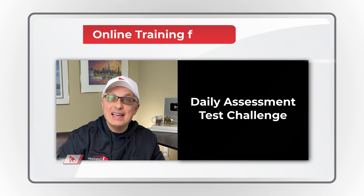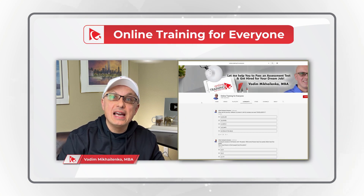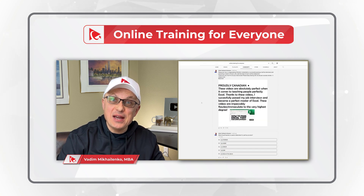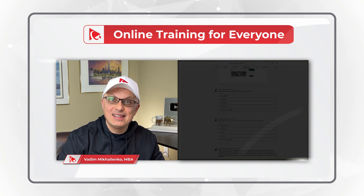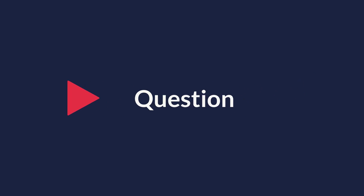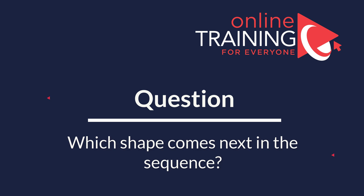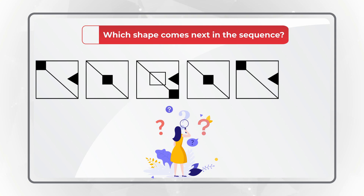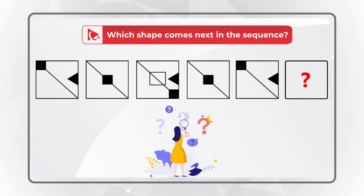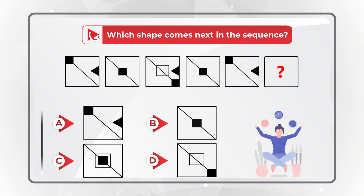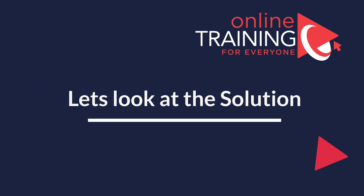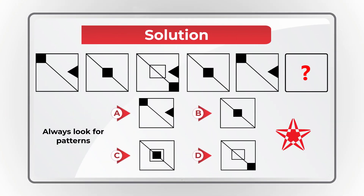I would like to ask you to participate in our daily assessment test challenge. I post new questions every day in the community tab of the YouTube channel and give you an opportunity to answer, then I post the answer in comments the next day. Please check it out to test your knowledge. Here is an amazing question which tests your analytical skills. You need to determine which item comes next. You are presented with a series of 5 rectangles and the 6th rectangle is missing. Select one of 4 different choices — A, B, C, and D.